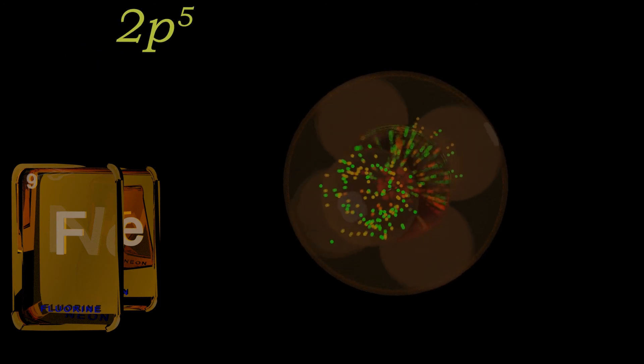Fluorine, nine protons, ten neutrons, and nine electrons, will add the fifth electron to the p shell and go into a second or another one of the 2px, y, or z orbitals. Again, it will have opposite spin. This is the 2p5 electron.